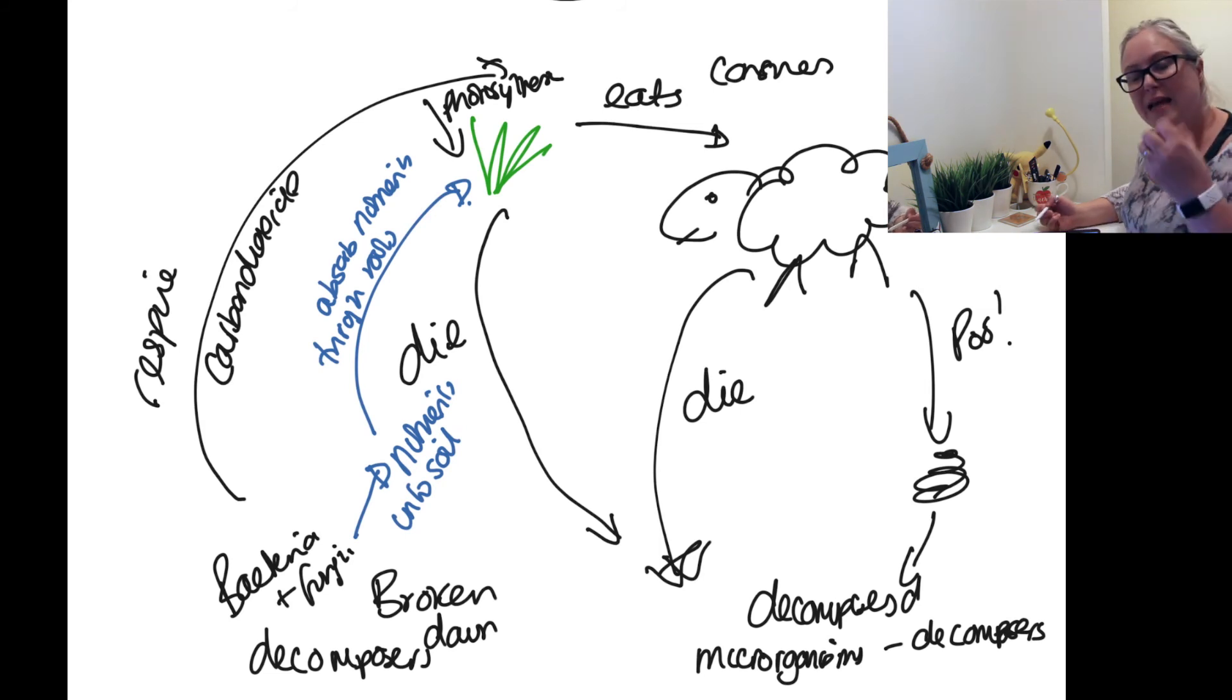So we've got our plants taking in those nutrients and carbon dioxide from those decomposers, but also our plants dying, our animals dying, and we've got feces, poo being produced, all of which our decomposers, our bacteria and fungi, will use to break down as their food source, and then they will respire and release nutrients back into the soil.